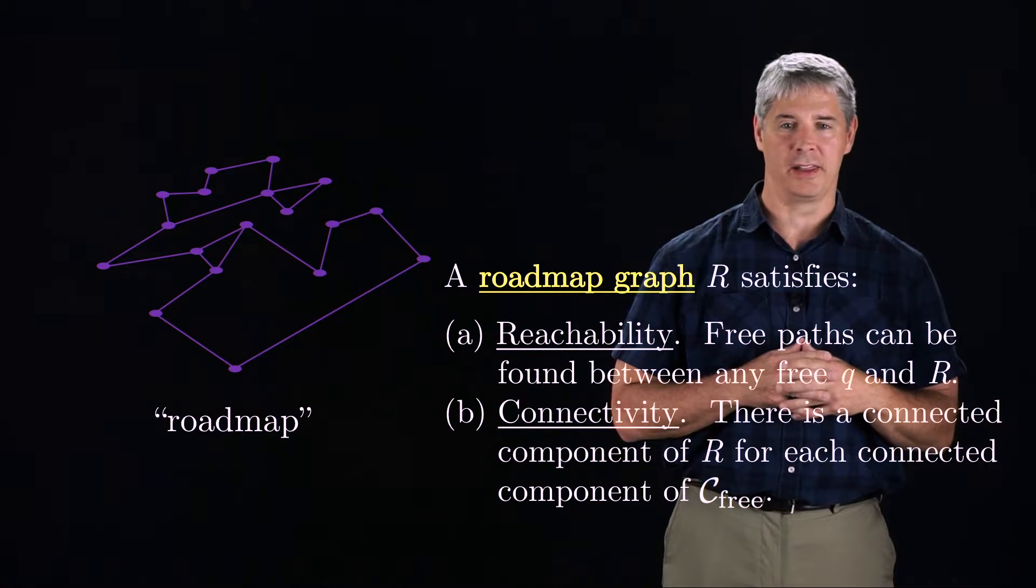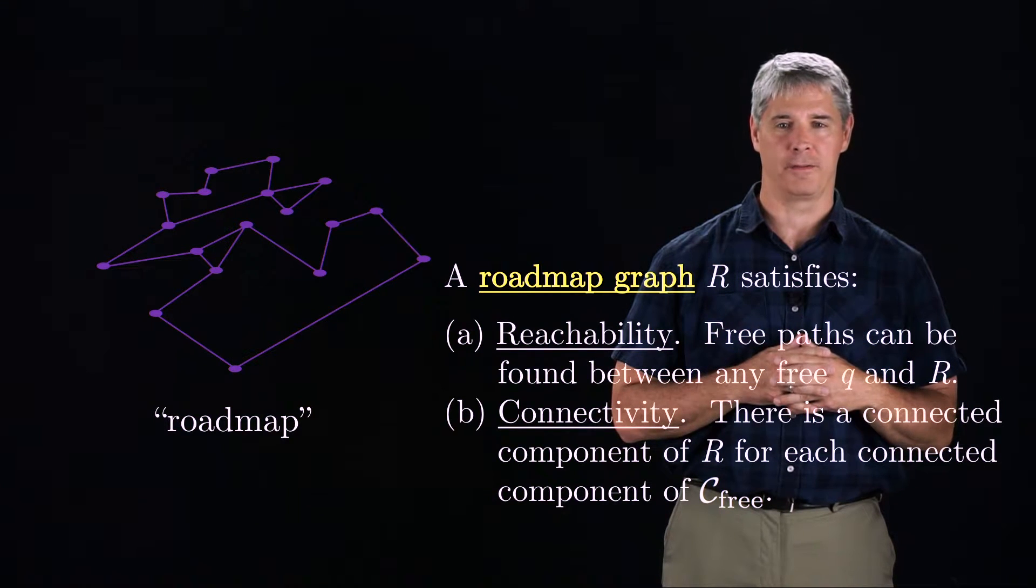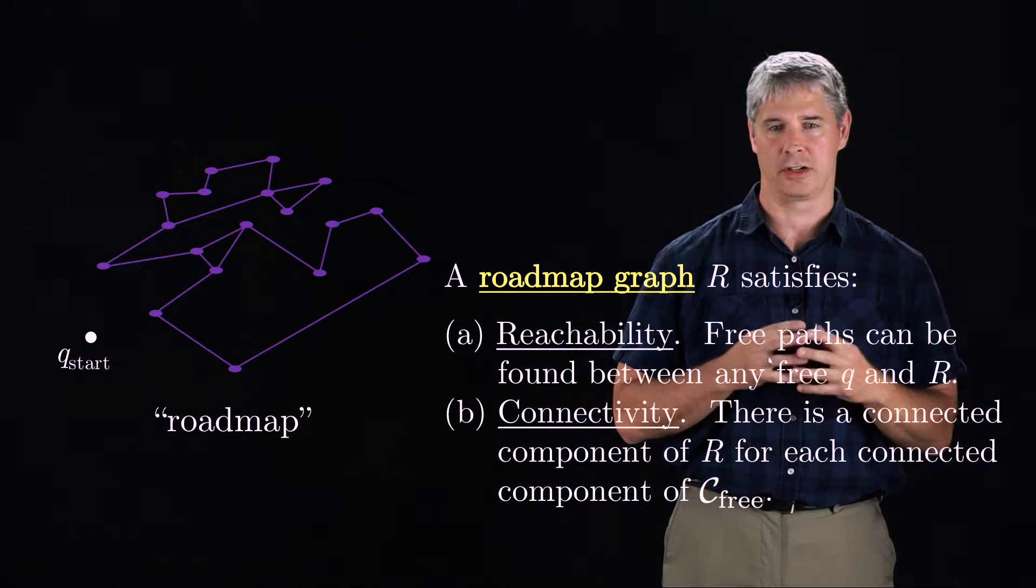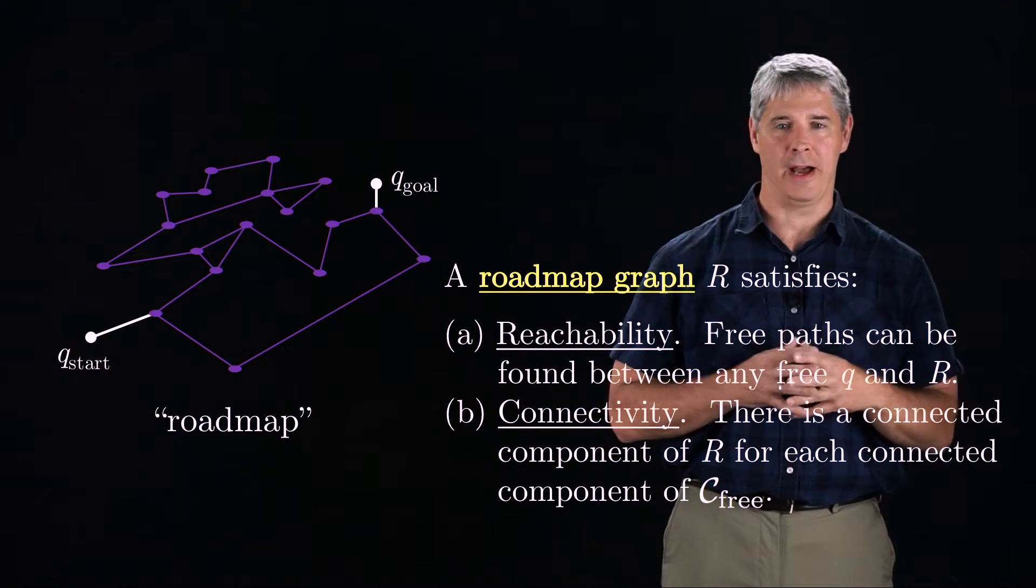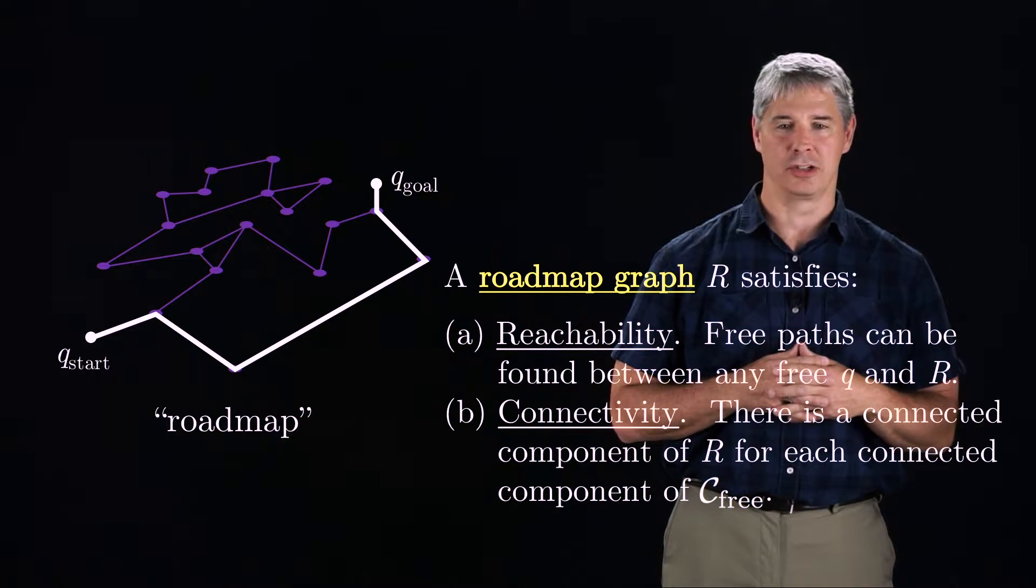If these conditions are satisfied, then any path planning problem can be solved by first finding a path from the start configuration to the roadmap, then finding a path from the goal configuration to the roadmap, then finding a path on the roadmap to connect the two.